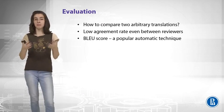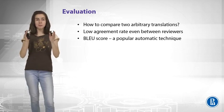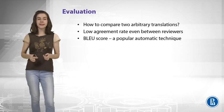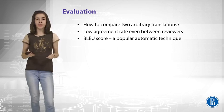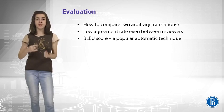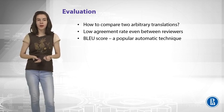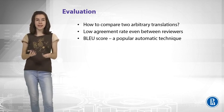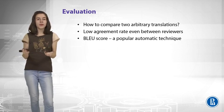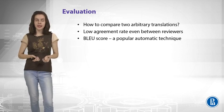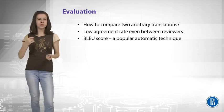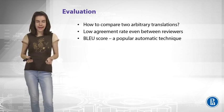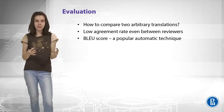For evaluation, you can say we have parallel data, so why not just split it into training and test sets and compare correct translations with those produced by our system? But how do you know that a translation is wrong just because it doesn't appear in your reference? Language is so variable that every translator would produce different translations — so if your system produces something different, it doesn't necessarily mean it is wrong.